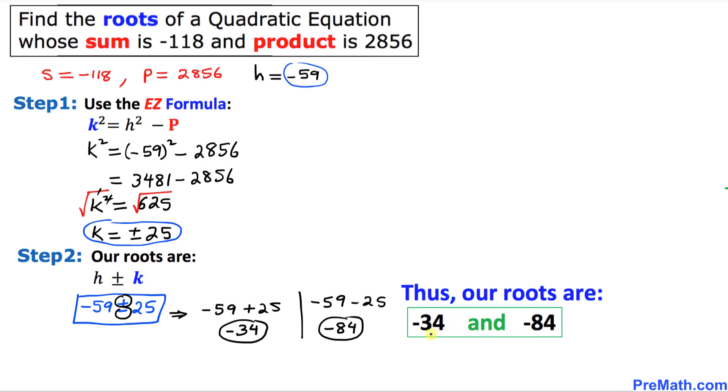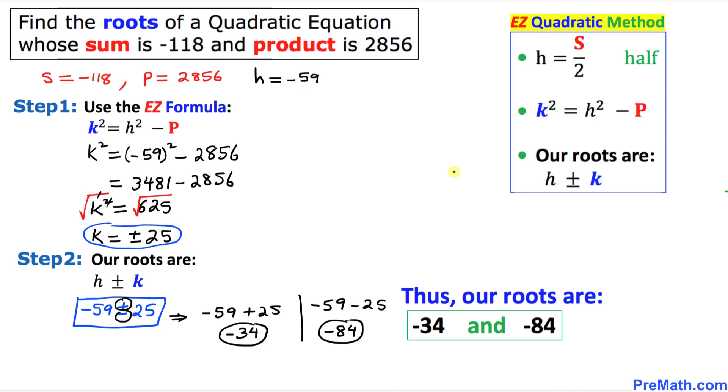And if we multiply these two roots we are going to get 2856 and if we add them we are going to get negative 118. And for your information these are the steps that we perform in our calculation. Thanks for watching and please don't forget to subscribe to my channel for more exciting videos. Bye.